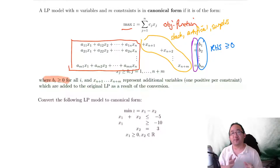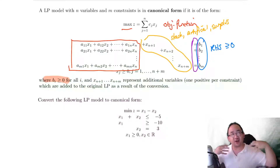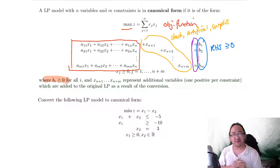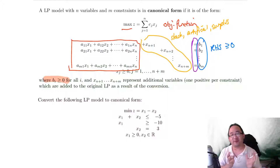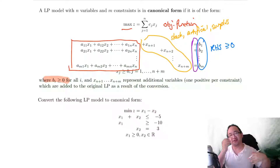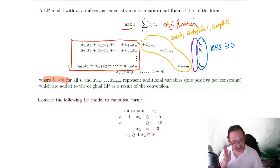The reason we have a common format for LPs is that on a computational level, having a common format allows the computer to attack all LPs the same way. Having a common model that every LP can be converted to makes it easier in a computational sense. It's more about the computational sense than anything else. But enough about that — we'll go on to an actual practical example.